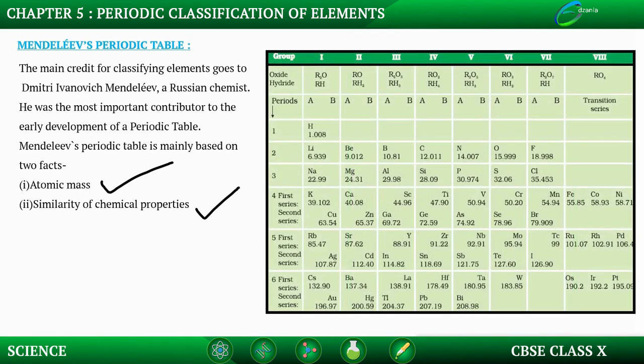Among chemical properties, Mendeleev concentrated mostly on the compounds formed by elements with oxygen and hydrogen. As seen in the diagram, he focused mainly on oxygen and hydrogen forming compounds.